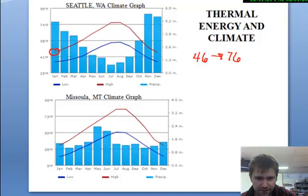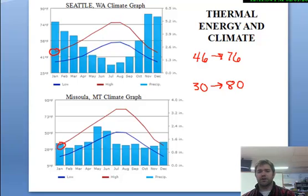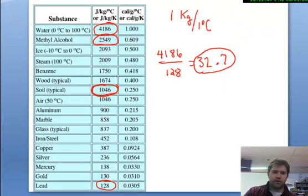So, Missoula is both colder during the winter, 30 is colder than 46, and warmer during the summer, 80 is warmer than 76, than Seattle is. So, why would that be? And the answer comes down to the ocean.